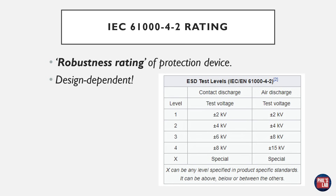The last parameter to be concerned with is the IEC 61000-4-2 rating. We won't go into much detail here, but effectively it's the robustness rating of our protection device. What rating we need is very much design-dependent. A table from the Wikipedia page on the IEC standard gives us various levels and their corresponding contact and air discharge ratings — a higher IEC rating gives a higher level of protection or robustness.